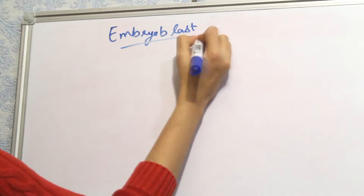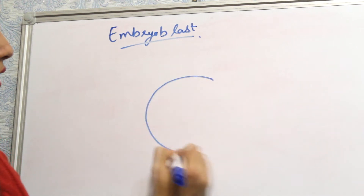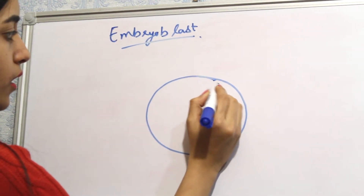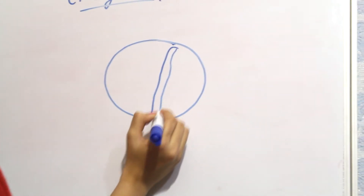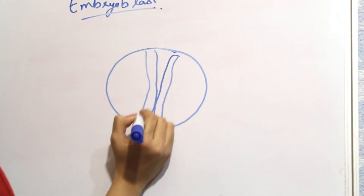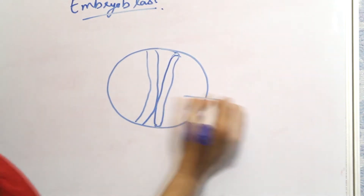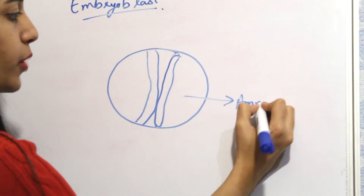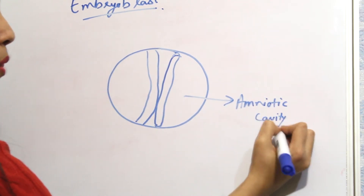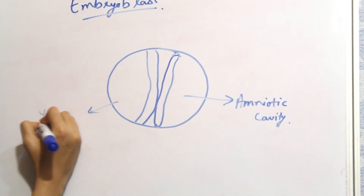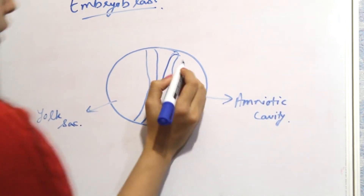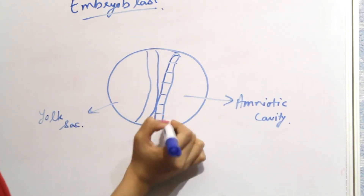Now let's discuss what happens to the embryoblast. This is the amniotic cavity and this is the yolk sac. The embryoblast has two layers of cells.